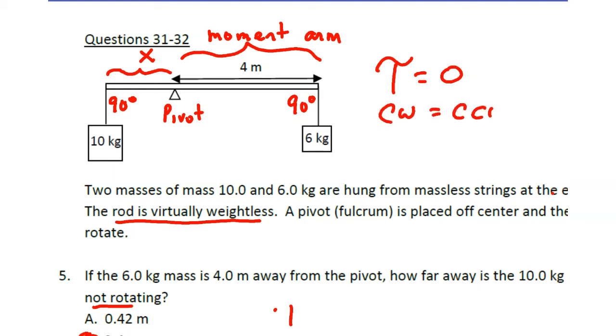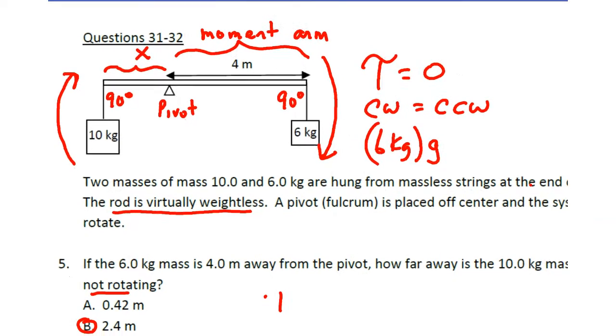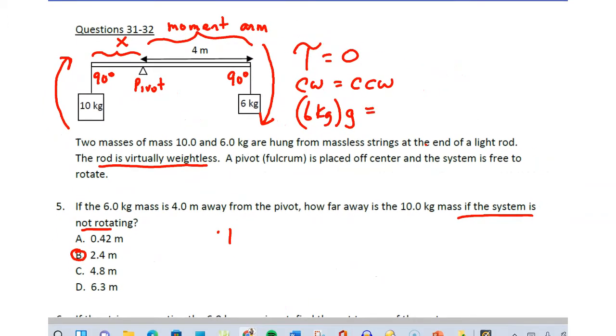Which one's the clockwise torque? Well, this is going to cause the system to rotate this way - that's clockwise. This is counterclockwise. So clockwise, that's 6 kg. To make it a weight we multiply by g. Multiplied by the moment arm, we get a torque.